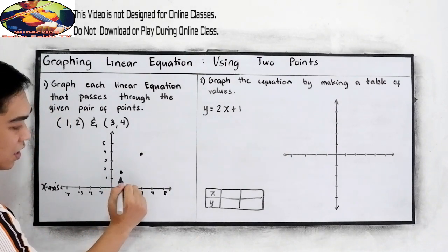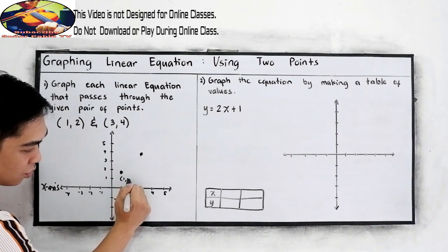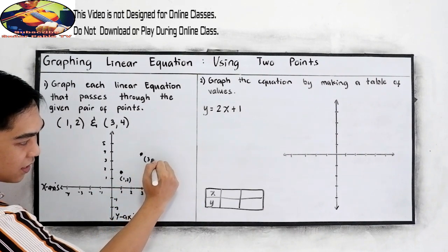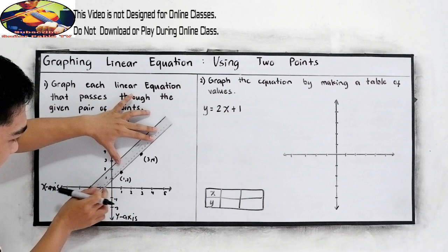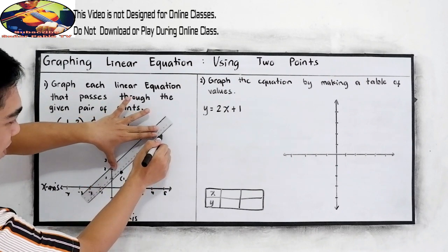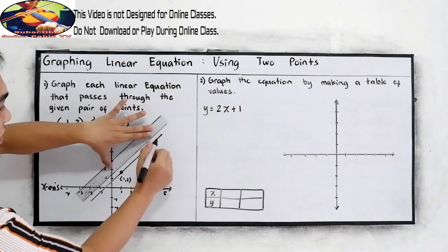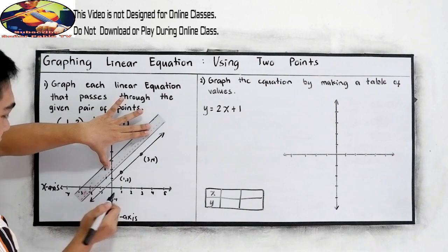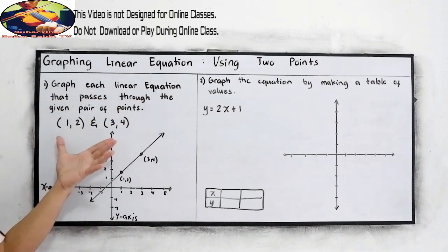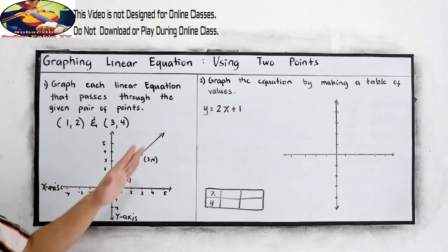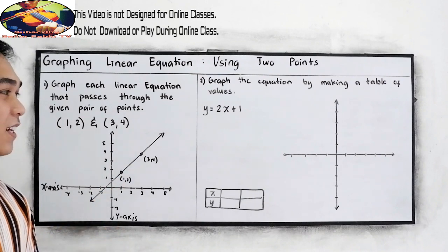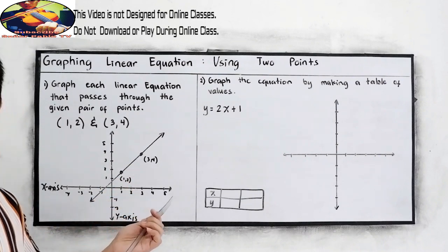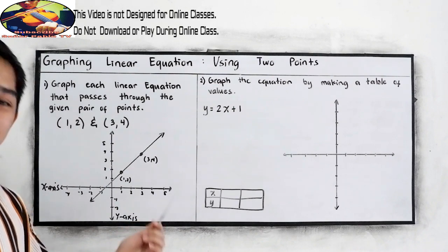This is the 1, 2, and 3, 4. So now, to graph, let us connect the two points. So this will be the graph of two points. So it's as simple as that, as easy as that.